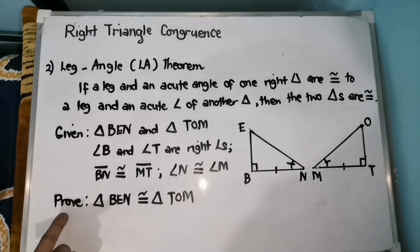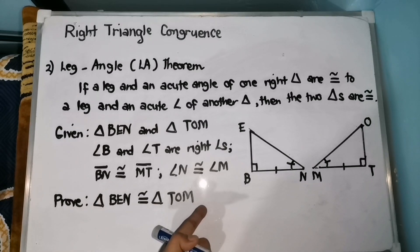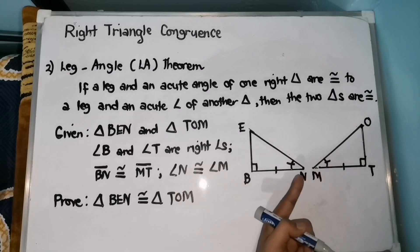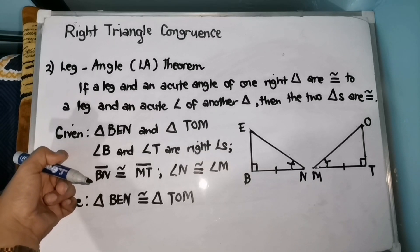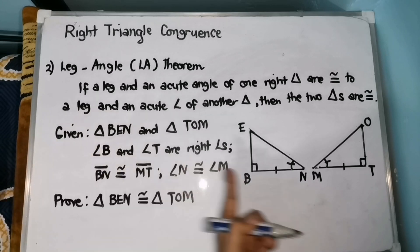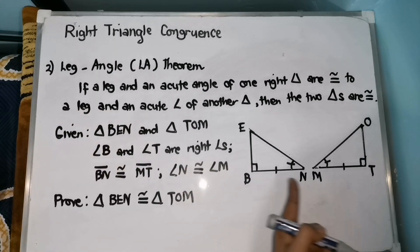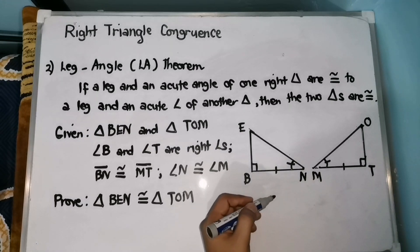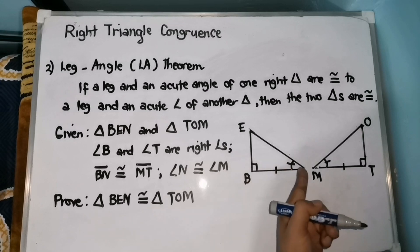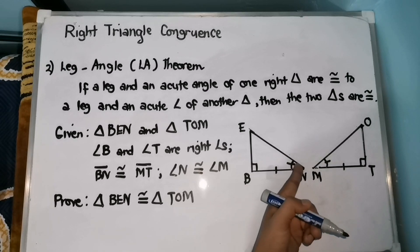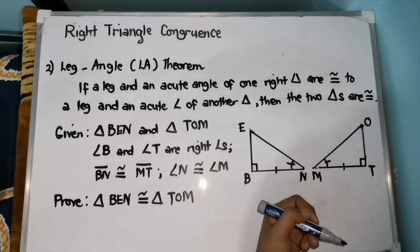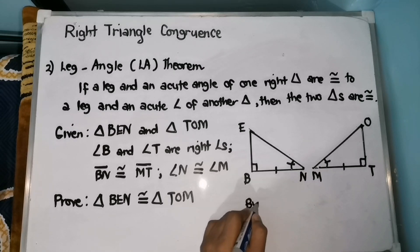We are going to prove that triangle BNO is congruent with triangle TOM under the Leg-Angle theorem. By inspection of the figures, placing special markings based on the given, we can see that we have a leg — BN and MT — that are congruent, and acute angles N and M that are also congruent. Therefore, the two triangles are congruent by the Leg-Angle theorem.